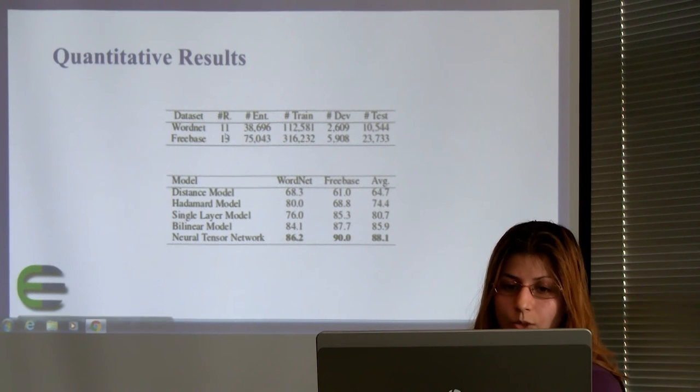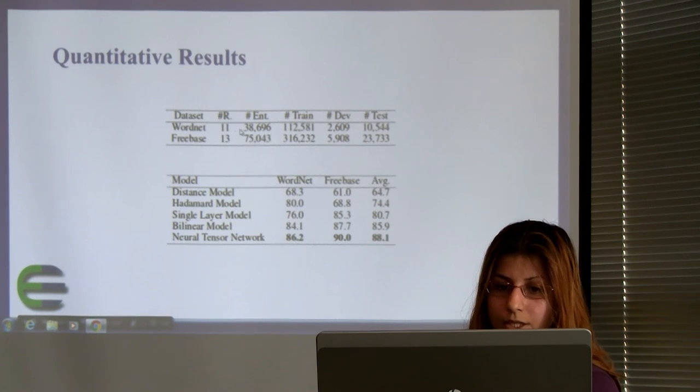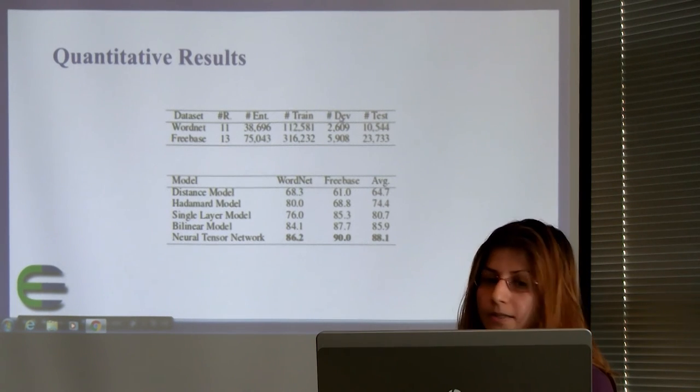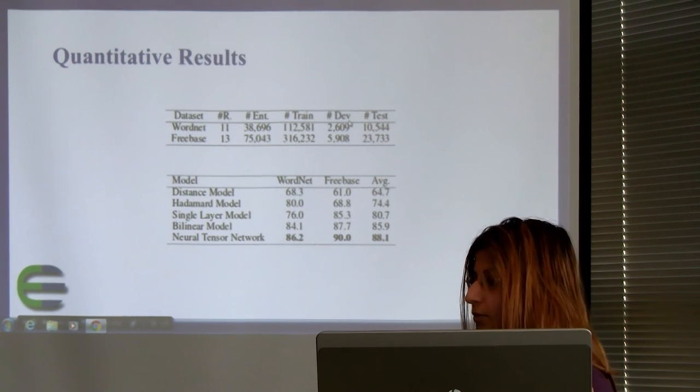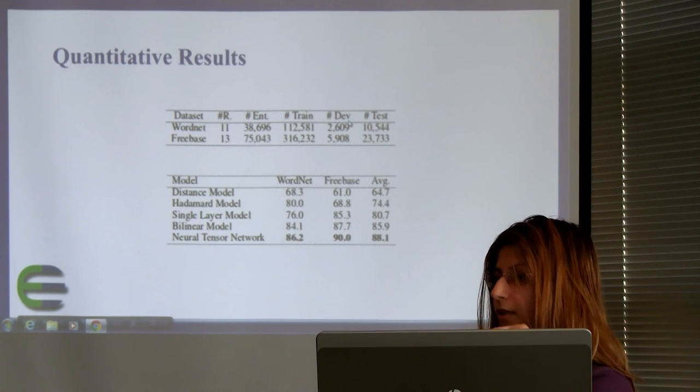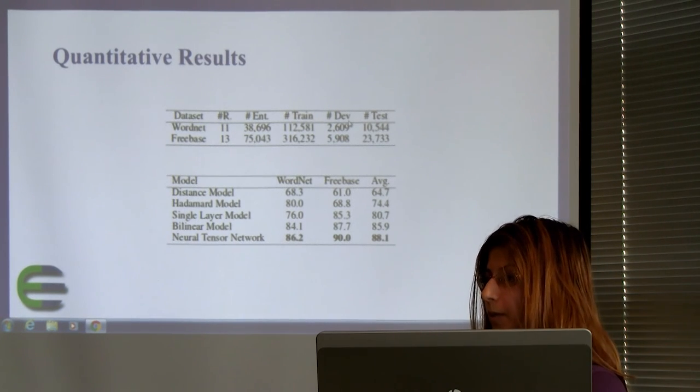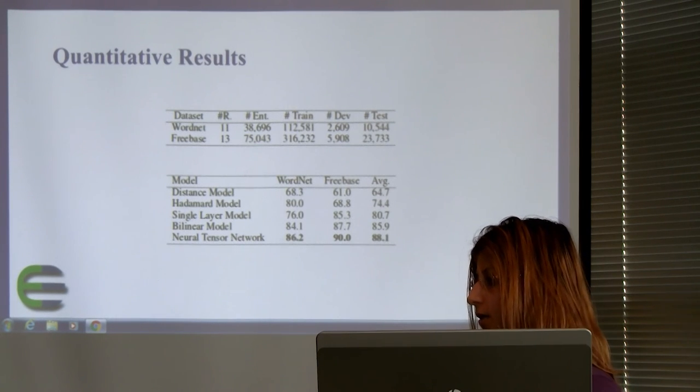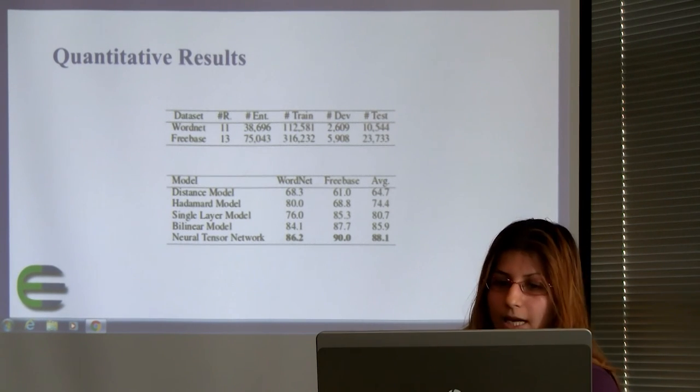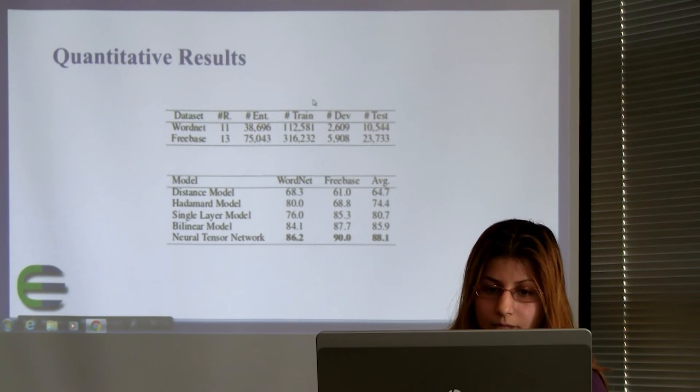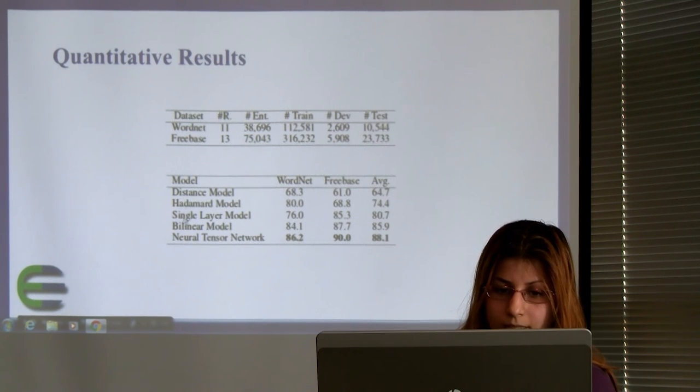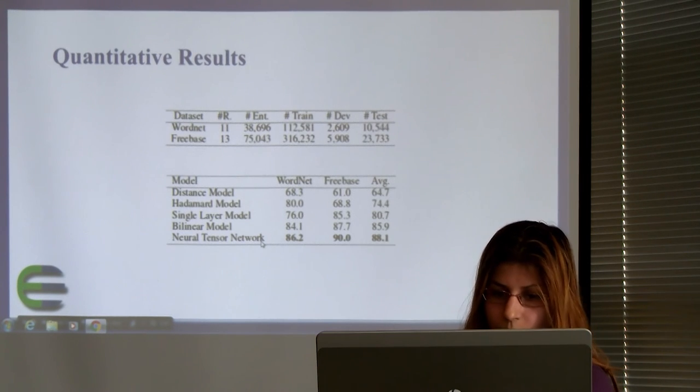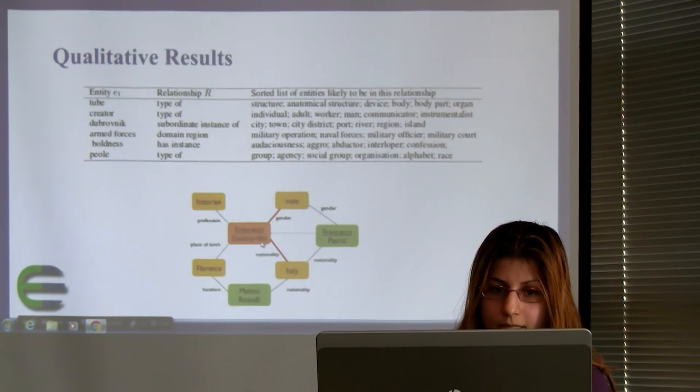And here is the data set. They have 11 unique instances of relations entities. And they also have development set. Because in that formula, the G, we had the probability. What is the threshold of probability for some relation to be accepted and be added to the knowledge base that we have? And the models that I discussed about them. And the result for the Neural-Tensor network is the best.